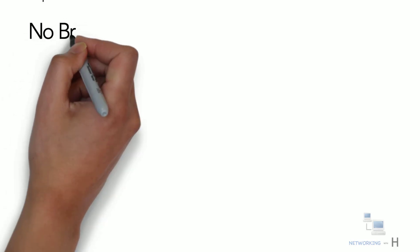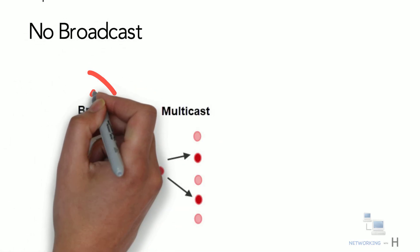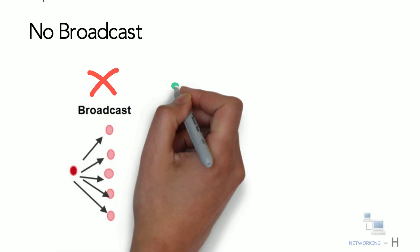Another feature is no broadcast. IPv6 does not have any broadcast support. Instead, it uses multicast to communicate with multiple hosts.